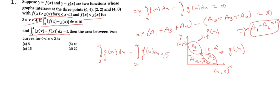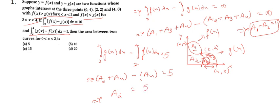From 2 to 4, g(x) contains only A2 and A4, so we get A2 + A4. And f(x) from 2 to 4 contains only A4. So we have A2 + A4 minus A4, which gives A2 equals 5.